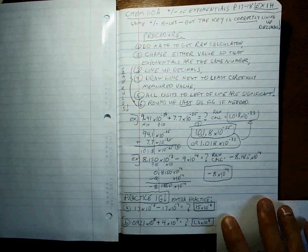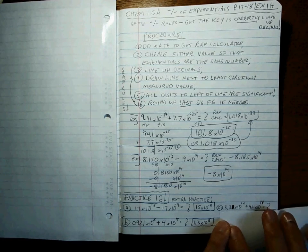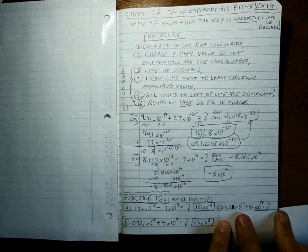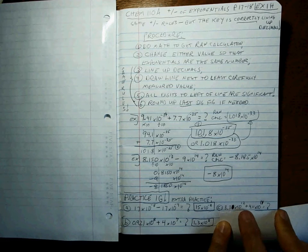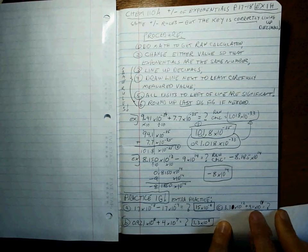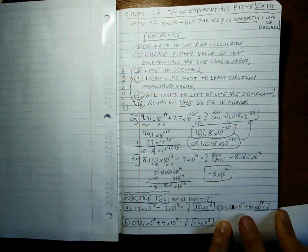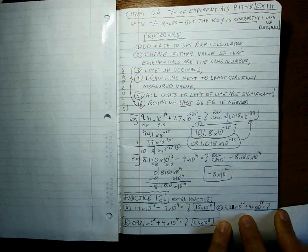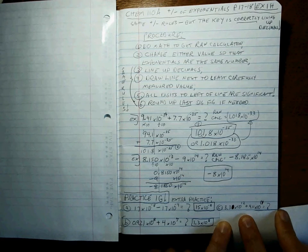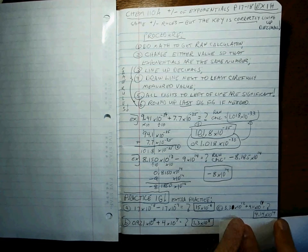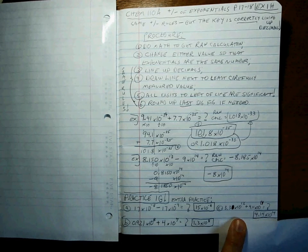One more example problem. There it is: 3.3 times 10 to the twelfth. Ignore that big blotch there. 3.3 times 10 to the twelfth plus 4.11 times 10 to the fourteenth. What's the final answer? Hit pause. Okay, you've paused, you've done your work, you've gotten your calculator, you've seen the raw answer, you've gone back through, figured out the sig figs. And if you get 4.14 times 10 to the fourteenth, you are a superstar.